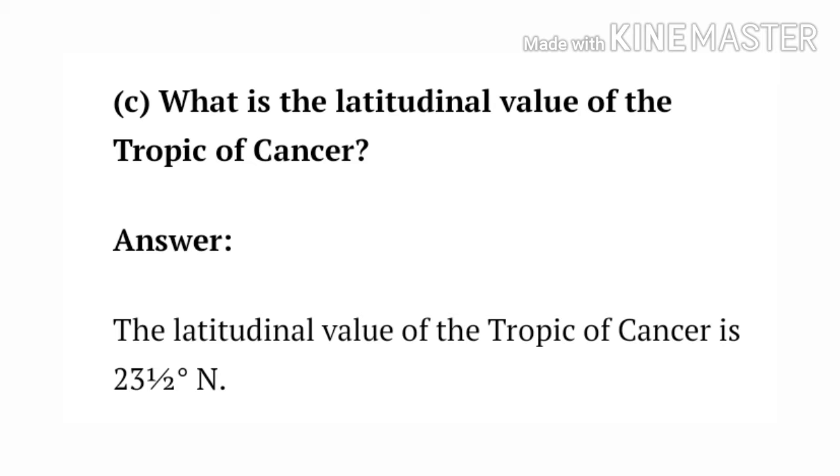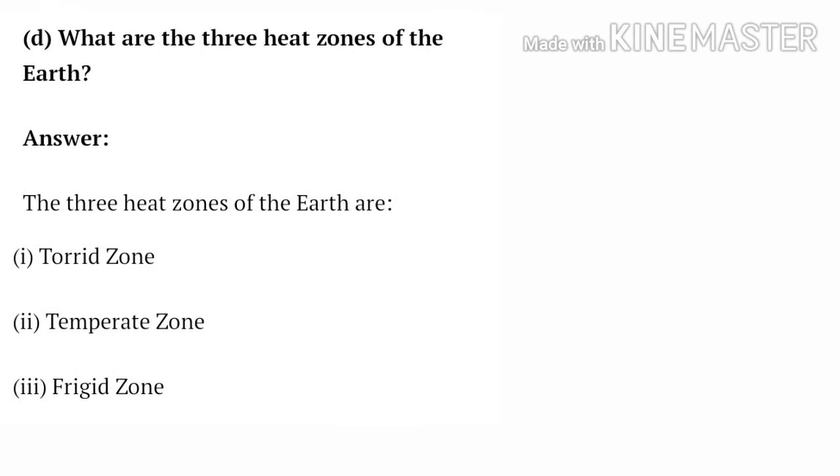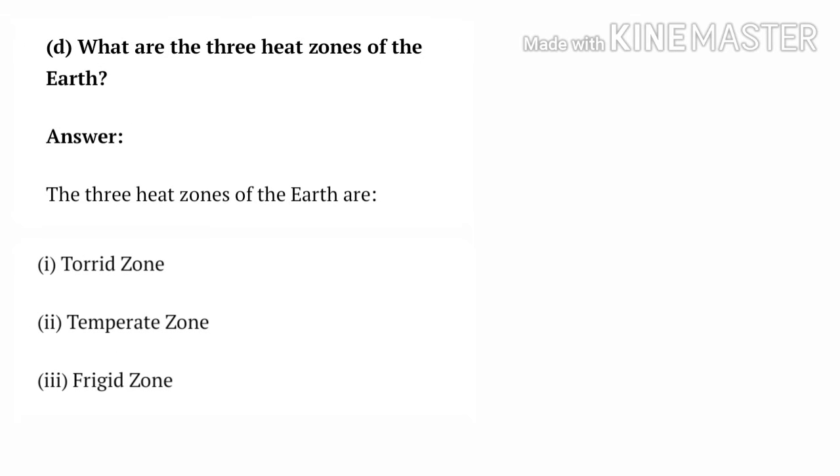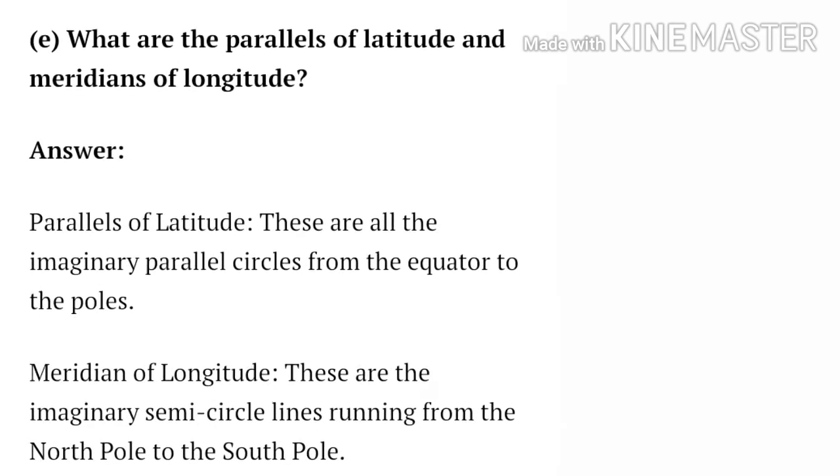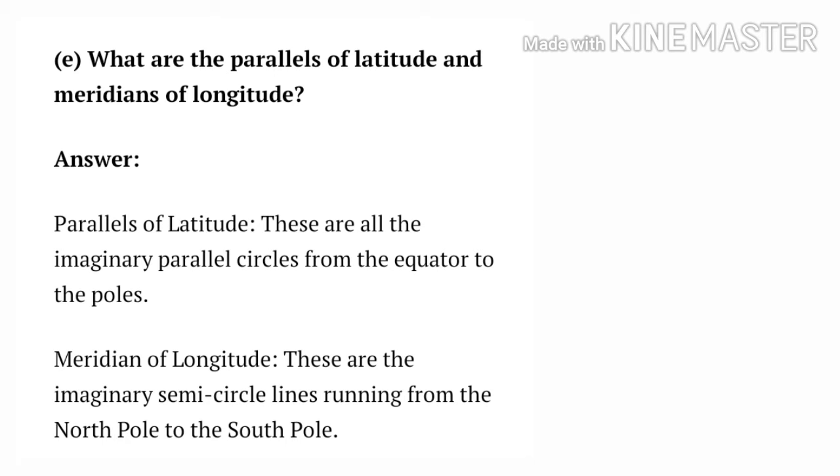Question number D: What are the three heat zones of the earth? Answer: The three heat zones of the earth are: 1. Torrid zone, 2. Temperate zone, 3. Frigid zone.